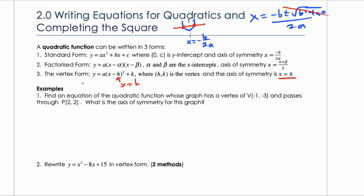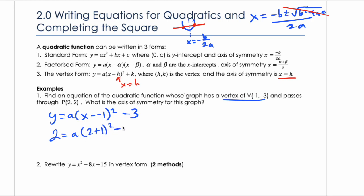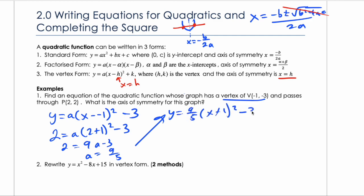Now we're going to answer some questions. Find the equation of a quadratic function whose graph has a given vertex and passes through a given point. They give us the vertex, so we start with vertex form: y equals a times (x minus negative 1) squared plus negative 3, which simplifies to (x plus 1) squared minus 3. To get the a value, substitute in the point (2, 2): 2 equals 9a minus 3, so a equals 5 ninths. Wait — solving gives a equals 9 fifths. The equation is y equals nine-fifths times (x plus 1) squared minus 3, and the axis of symmetry is x equals negative 1.